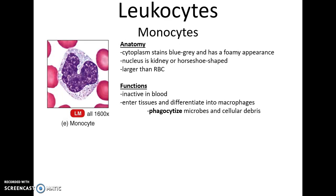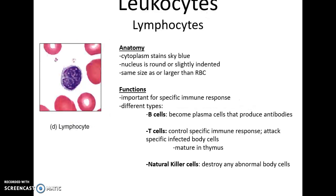Monocytes have a blue-grayish, foamy cytoplasm. They have a large nucleus, often kidney-shaped or horseshoe-shaped, and are larger than red blood cells. They are inactive in blood, but when they enter tissues they differentiate into macrophages, which are then able to phagocytize microbes and cellular debris.